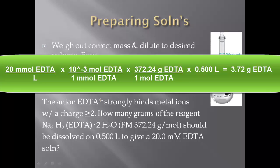What they want is how many grams. I'm already in grams. The only thing I have to take care of is the liters on the bottom from the original concentration. All I do is take the 0.5 liters and multiply it to cancel out the liters. And that gives me 3.72 grams of EDTA. So 3.72 grams of EDTA should be dissolved in 0.5 liters to make a 20 millimolar EDTA solution.